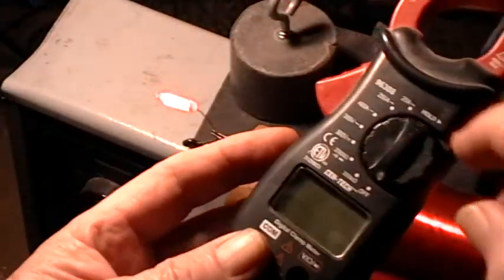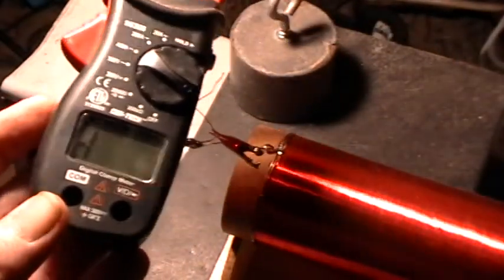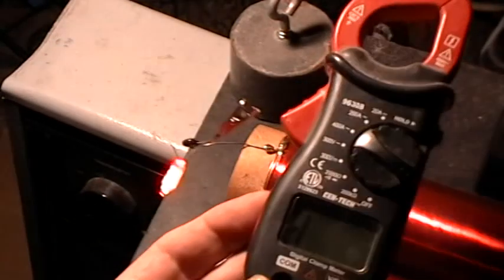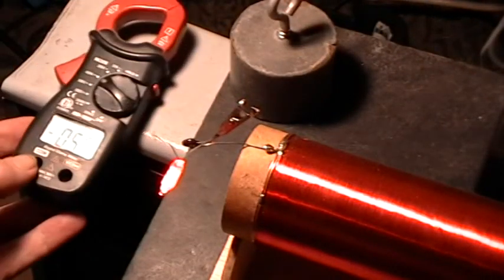The clamp-on meter shows whatever I want it to show, depending on where I hold it, without even being clamped to anything. 400 amps, imagine that.